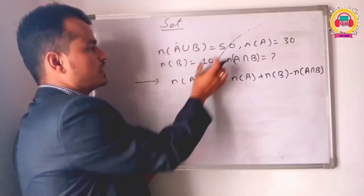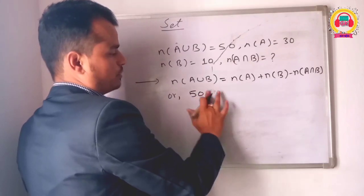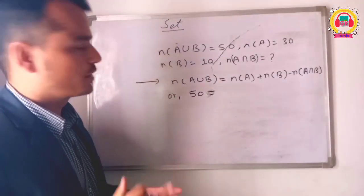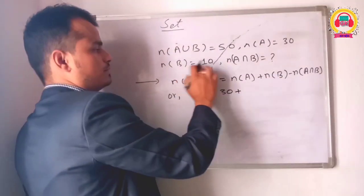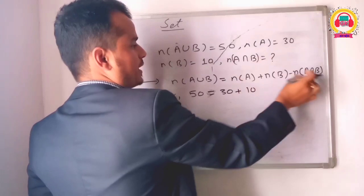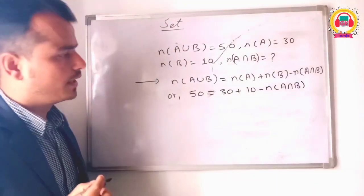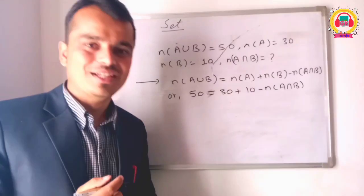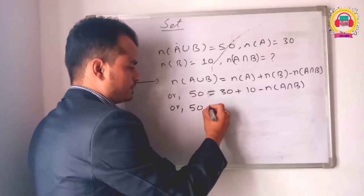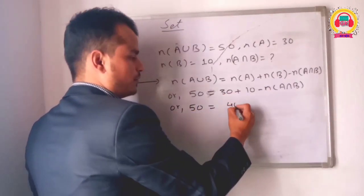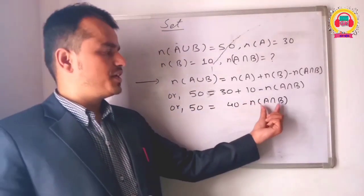You have to replace the known values. So: 50 equals 30 plus 10 minus number of A intersection B. That is 50 equals 40 minus number of A intersection B.